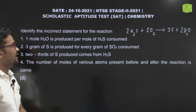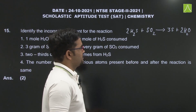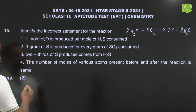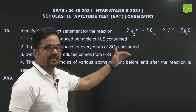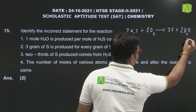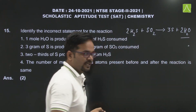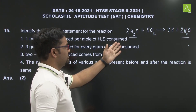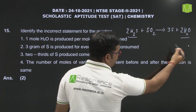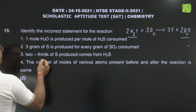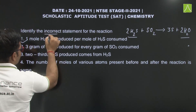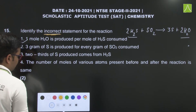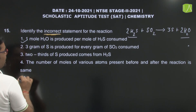Next question number 15: Identify the incorrect statement for the reaction 2H2S + SO2 → 3S + 2H2O. First statement: 1 mol of H2O produced per mol of H2S consumed. यहाँ पर 2 mol H2O बन रहा है और 2 mol H2S है — stoichiometric coefficient 1 लेने पर H2S के 1 mol से H2O का 1 mol बनेगा। So this statement is correct.